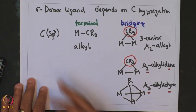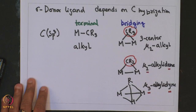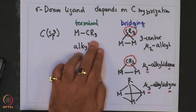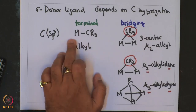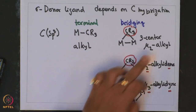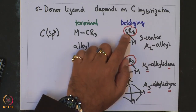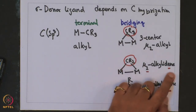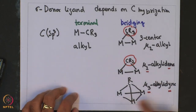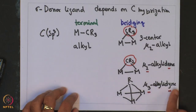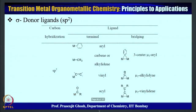To summarize: sp³ carbon can act as a terminal ligand where the metal is directly bound to the alkyl and the alkyl is bound to only one metal center. The alkyl can bind to more than one metal center. When bound to two metal centers as CR₃, it is mu-2 alkyl; as CR₂, it is mu-2 alkylidene; and when bound to three metal centers as CR, it is mu-3 alkylidyne.